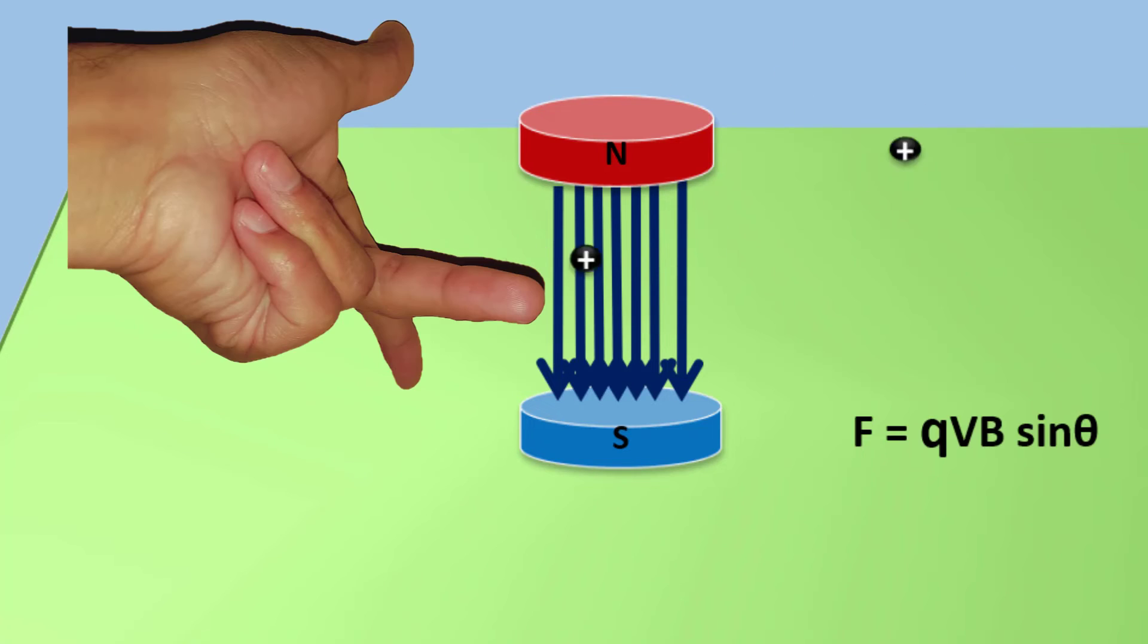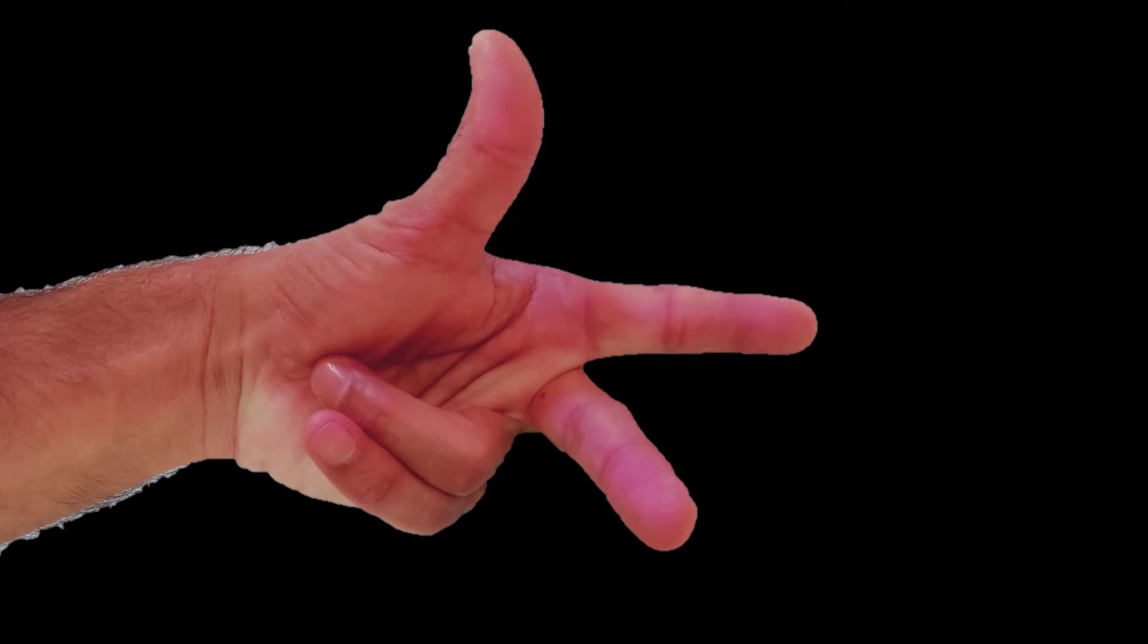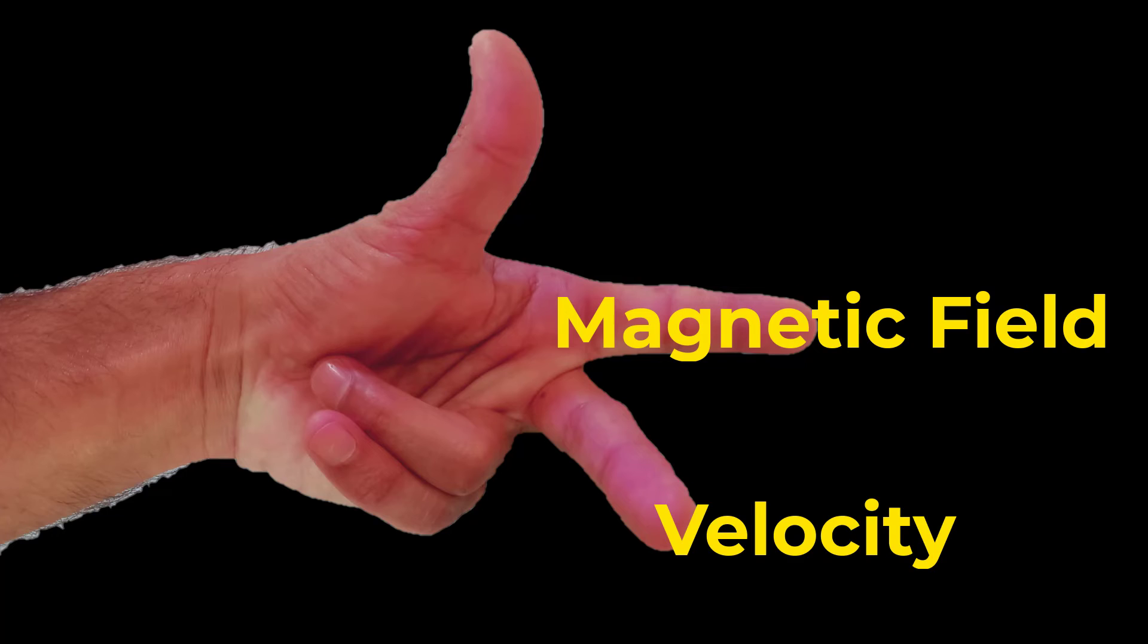Similarly, for a charge moving in a magnetic field, point the forefinger in the direction of the magnetic field. The middle finger in the direction of the velocity of the charge.